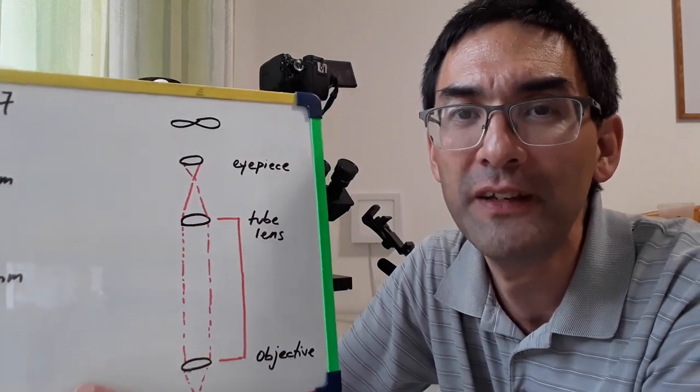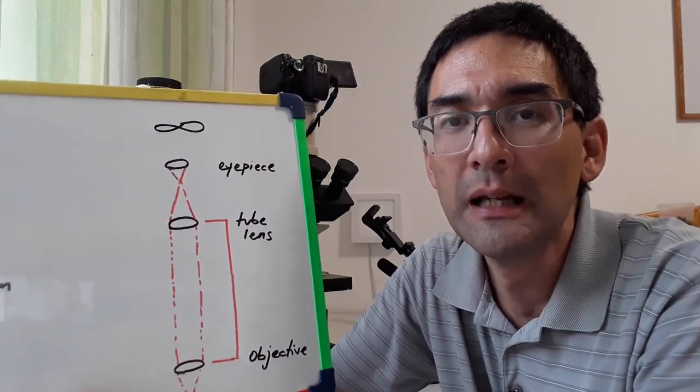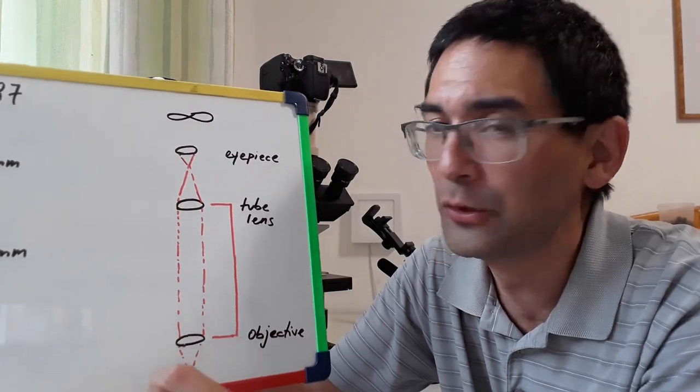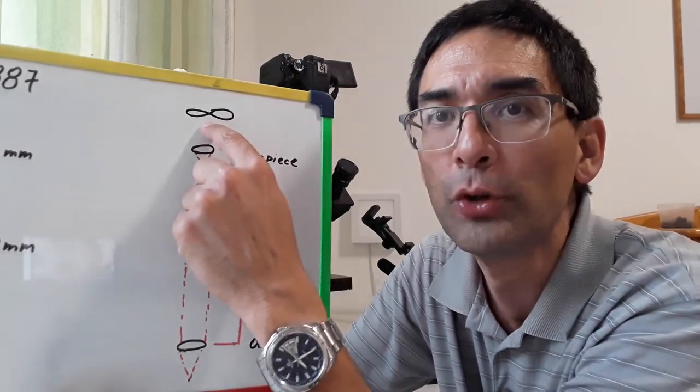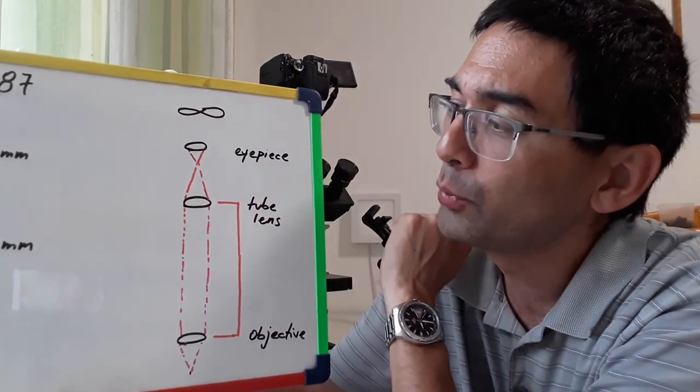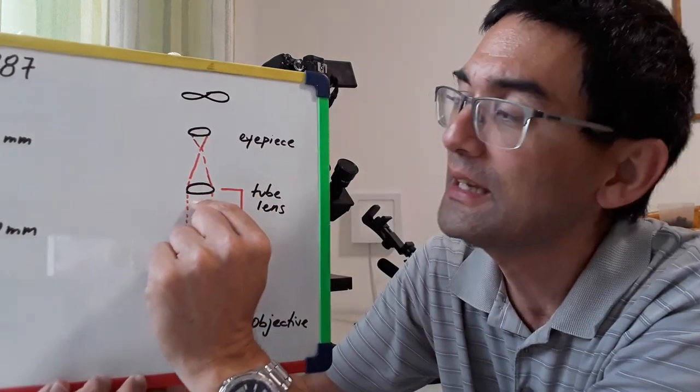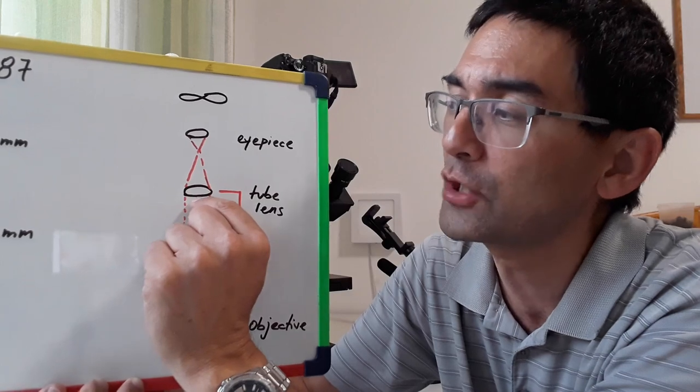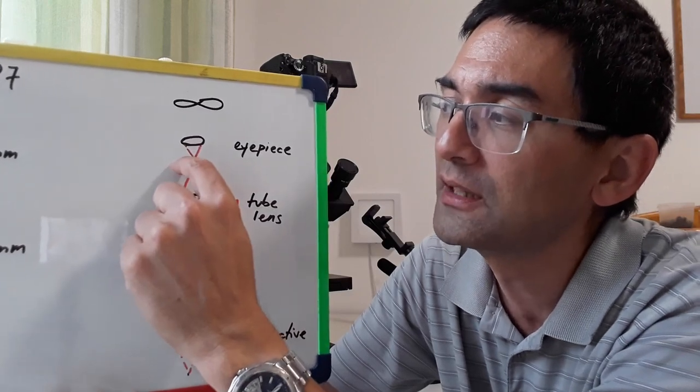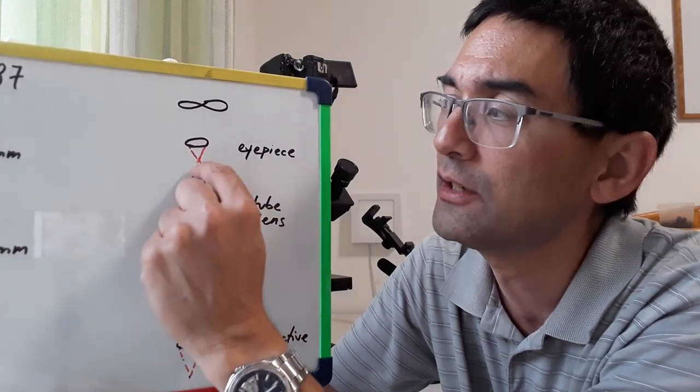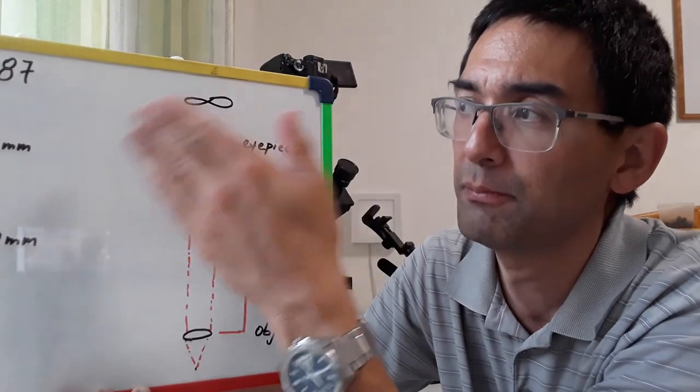And because this one here, the objective, now focuses the light into infinity, infinitely far away because the light beams are parallel, therefore you refer to these objectives as infinity. Now unfortunately I don't have an infinity objective with me right now so I cannot show you how it looks like but there is this infinity sign printed on the objective. But what you need now is a so-called tube lens and this tube lens is now inside the microscope tube.